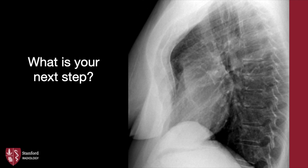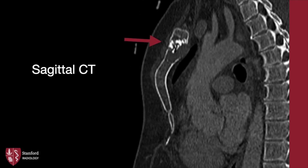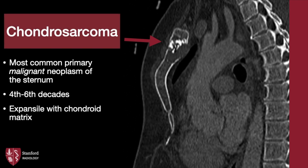What is your next step in this case? The sternum is bowed outward, giving a pectus carinatum appearance. However, the manubrium and upper sternal body are expansile. The answer again is to get a CT. Sagittal CT shows the expansile nature and chondroid matrix in the sternum. This was chondrosarcoma, the most common primary malignant neoplasm of the sternum. Adults in their fourth through sixth decades of life are commonly affected.